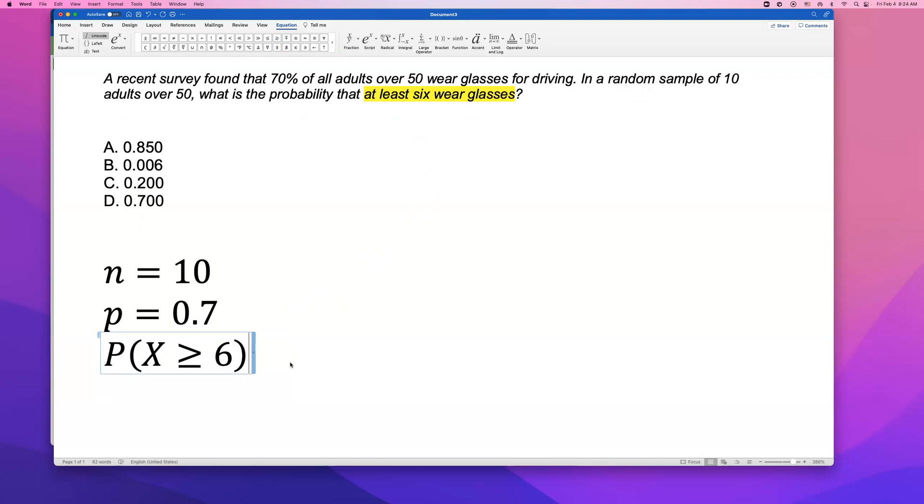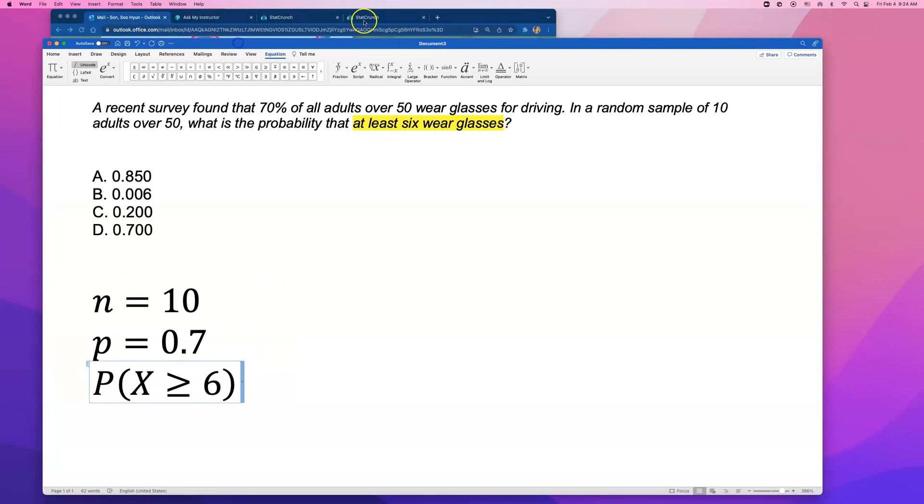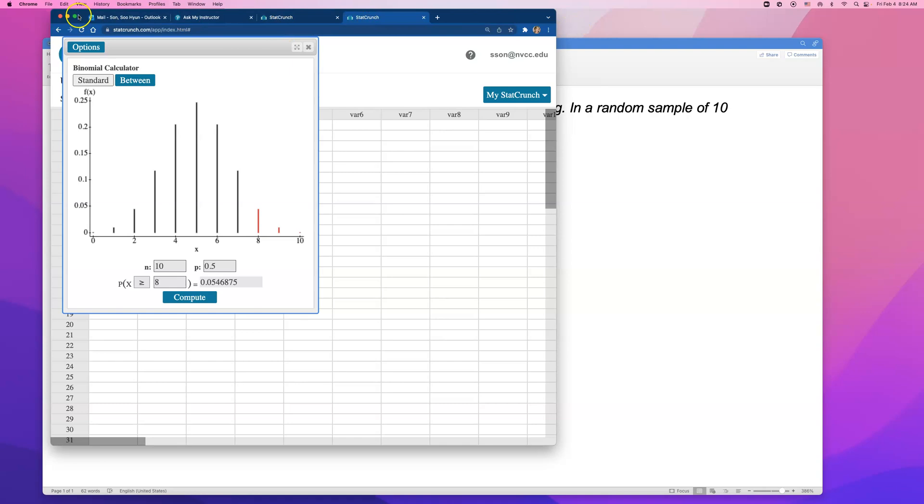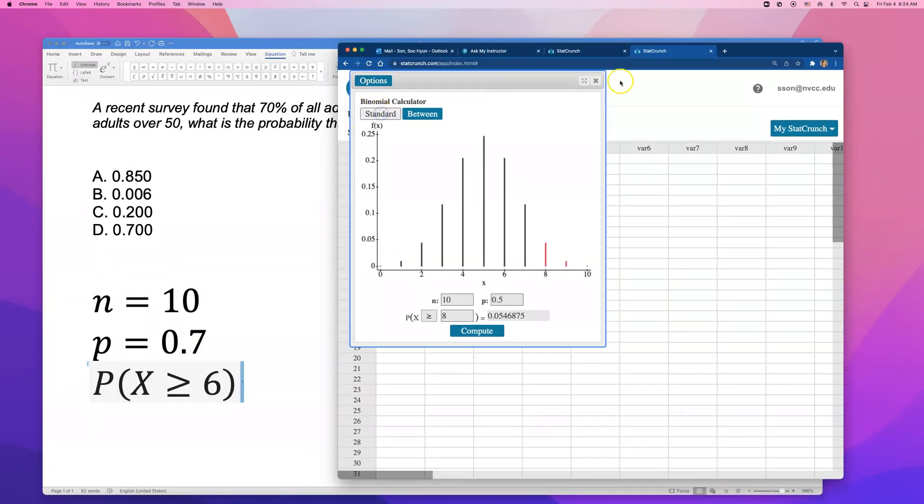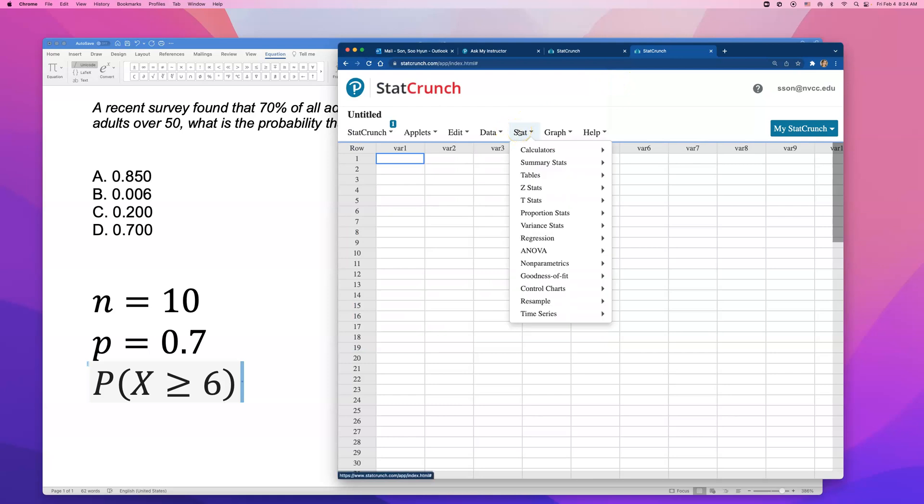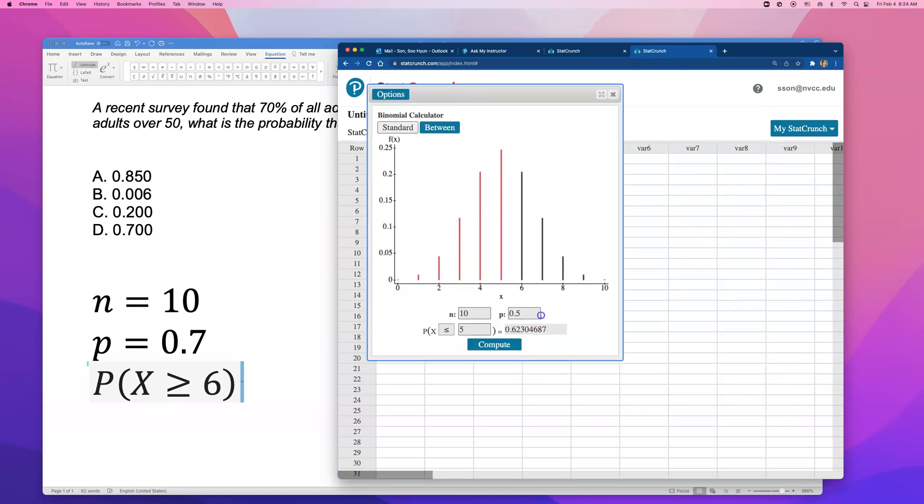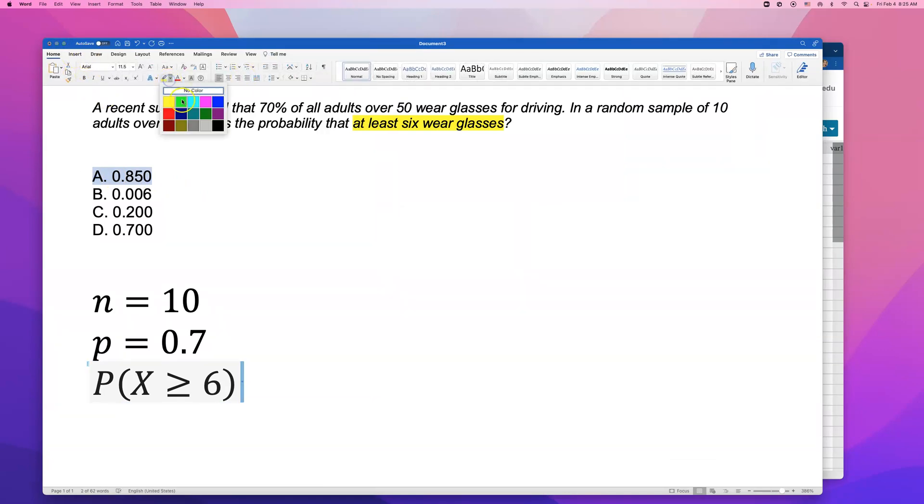So if I were to do this on StatCrunch, it's going to be so easy. I'm just going to open up StatCrunch's Binomial Calculator. So do Stat, Calculator, Binomial. And then type in n is 10, p is 0.70. And we want the probability that the number of people who wear glasses is greater than or equal to 6. So the answer should be 0.8497, rounded up to 85%. That's how I would do it on your homework or quiz because you are allowed to use StatCrunch.